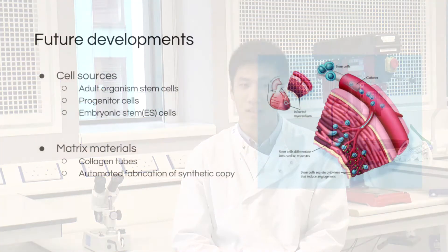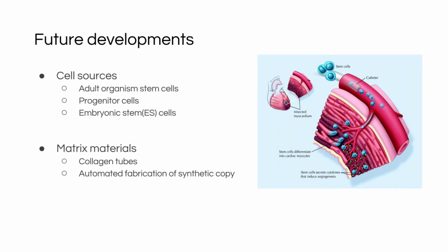Matrix materials are also important to investigate in the future, because current materials used in tissue grafts are not suitable for cardiac tissue engineering due to its complex structure. The collagen tube is one potential material for cardiac tissue engineering, and the automatic fabrication of synthetic scaffolds is an ideal technology to produce them.